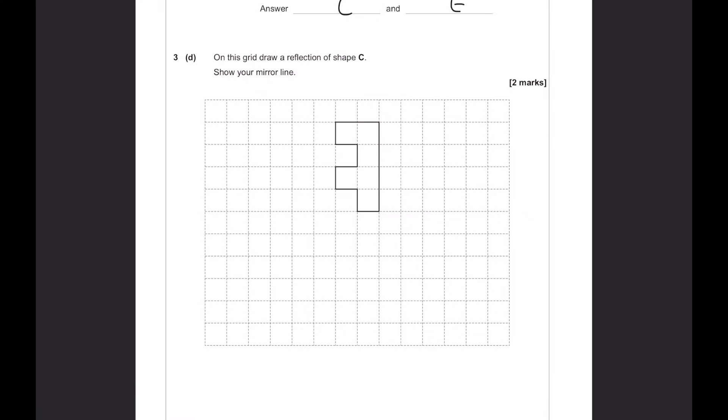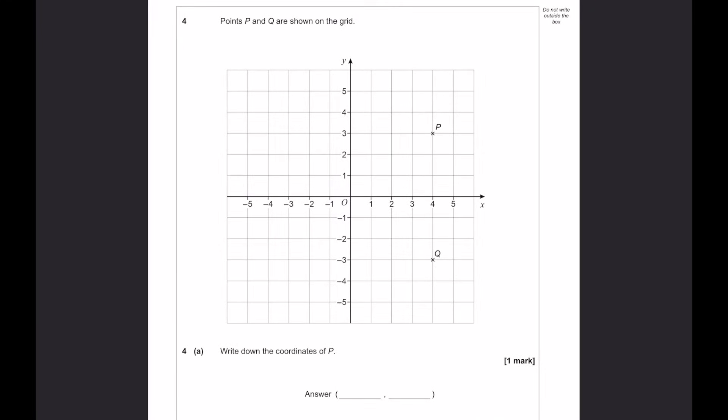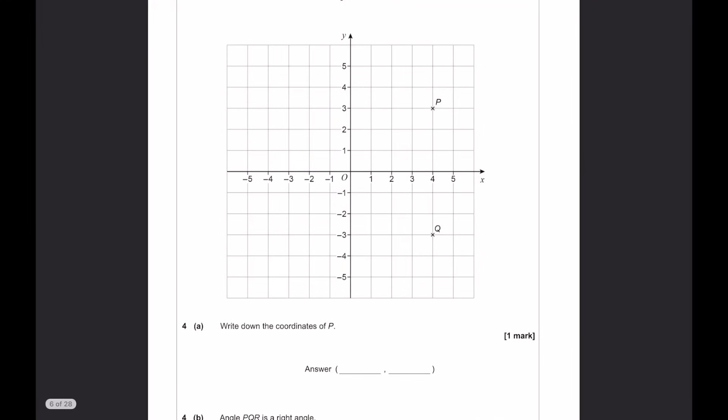On this grid, draw a reflection of shape c. So, let's draw a mirror line here. And we want to extend this down by 4, out by 2. And that will look like that. Points p and q are shown on the grid. Write down the coordinates of p. That will be 4, 3. 4 across, 3 up.